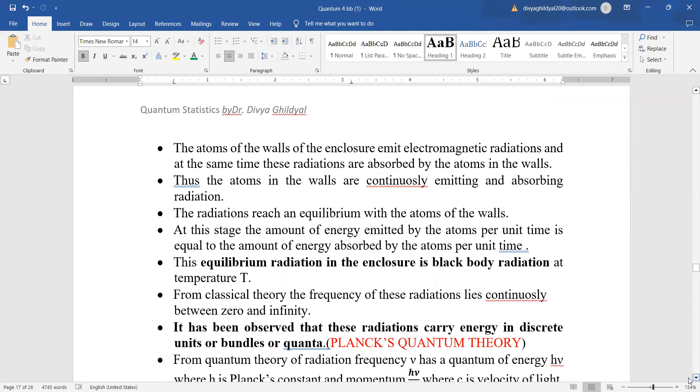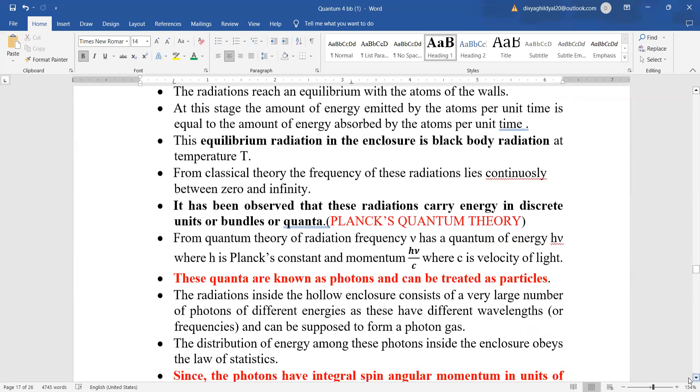The atoms of the walls of enclosure emit electromagnetic radiations and at the same time these radiations are absorbed by the atoms. Therefore the equilibrium radiation in the enclosure is black body radiation lying between zero and infinity.